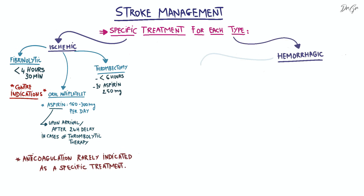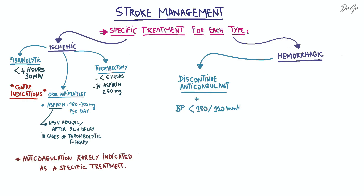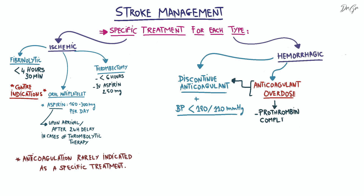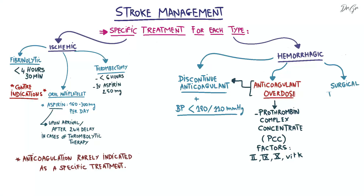For hemorrhagic stroke, specific treatment starts with discontinuing all anticoagulant treatments and ensuring blood pressure control below 180 systolic and 110 diastolic. In cases of anticoagulant overdose, discontinue anticoagulation and administer prothrombin complex concentrate containing factors 2, 7, 9, and 10, along with vitamin K. Surgical treatment may be considered in rare cases.